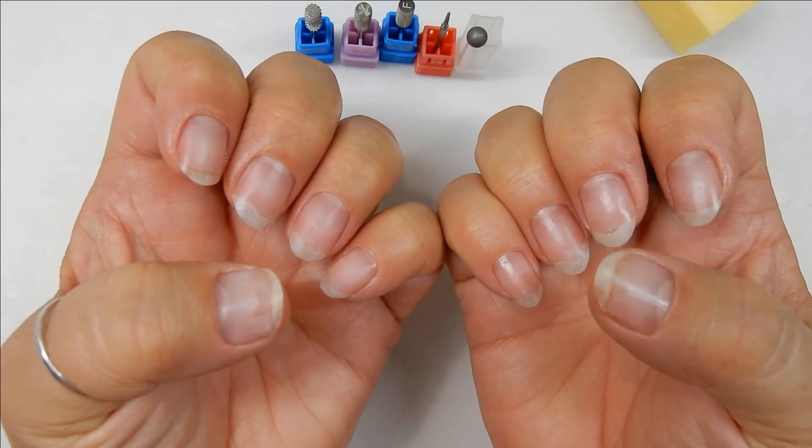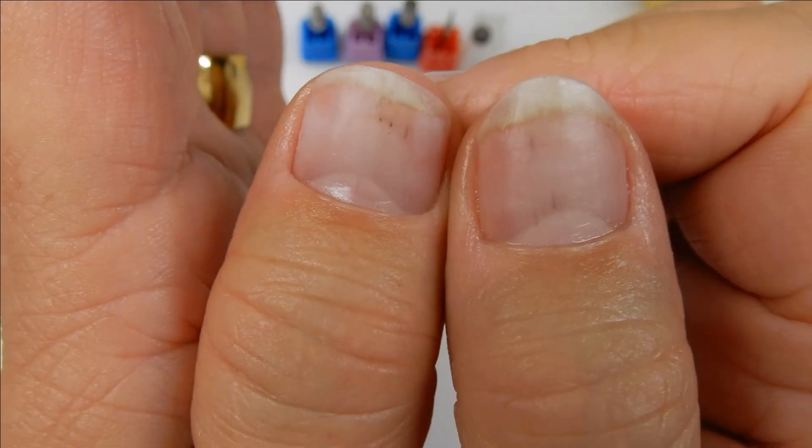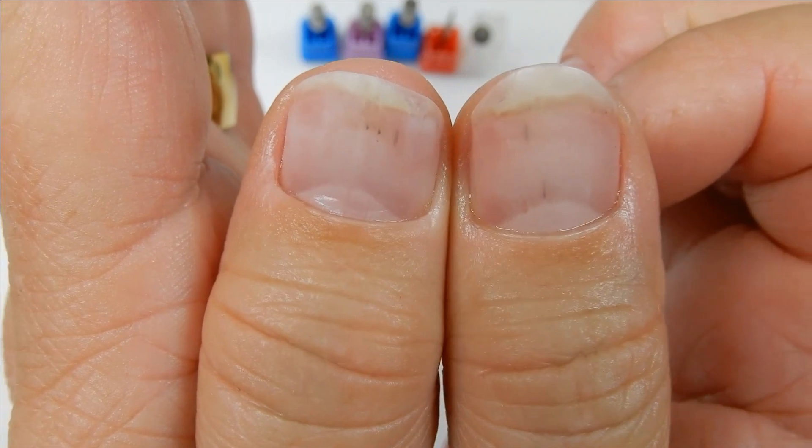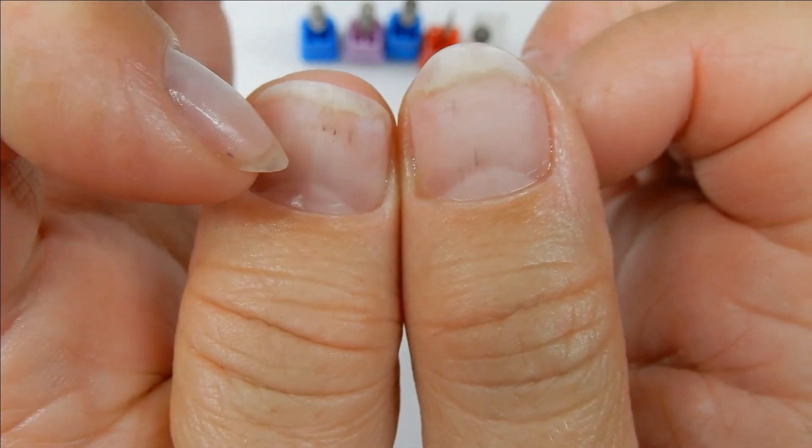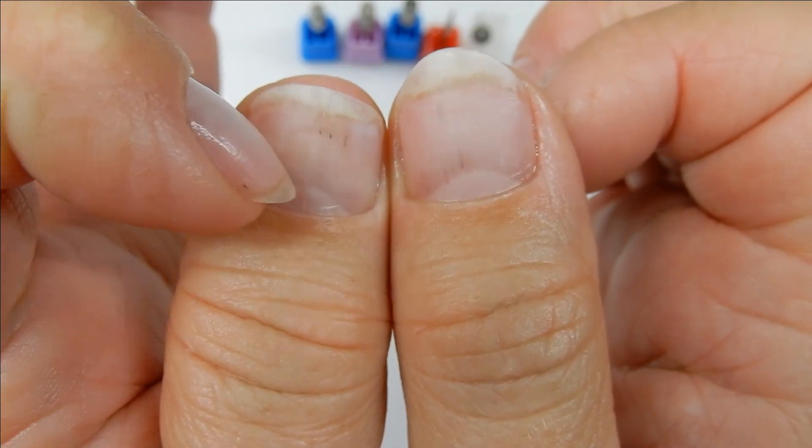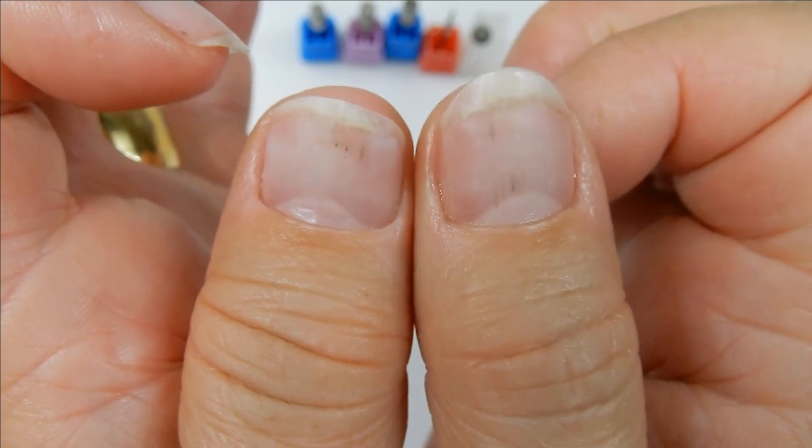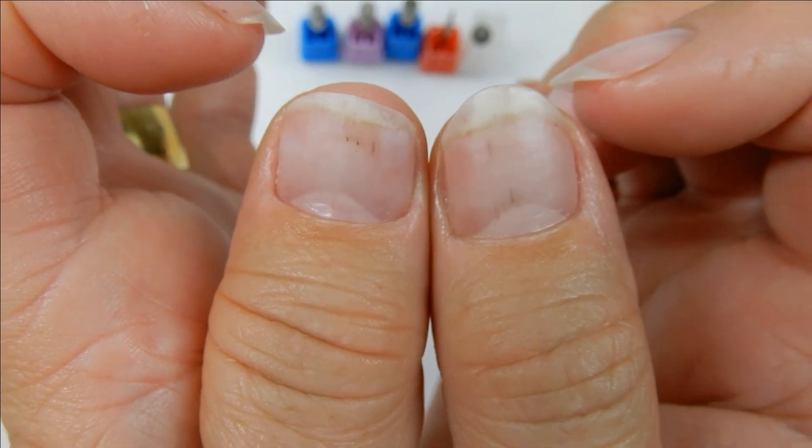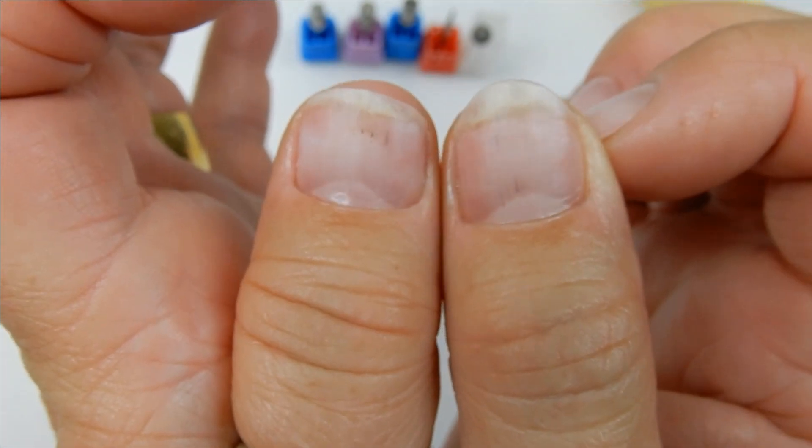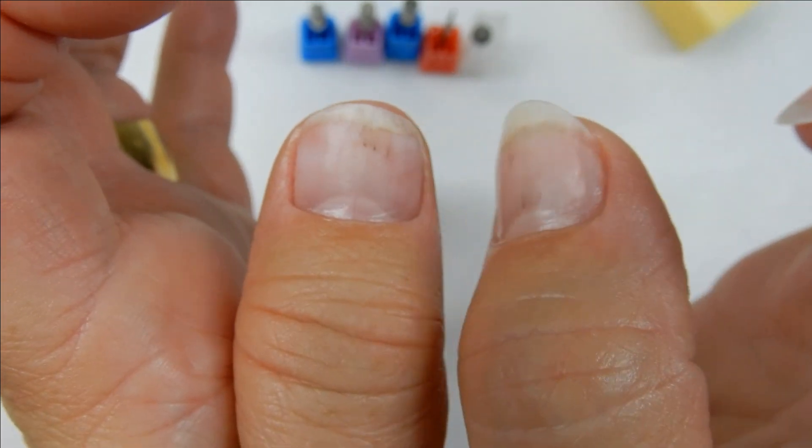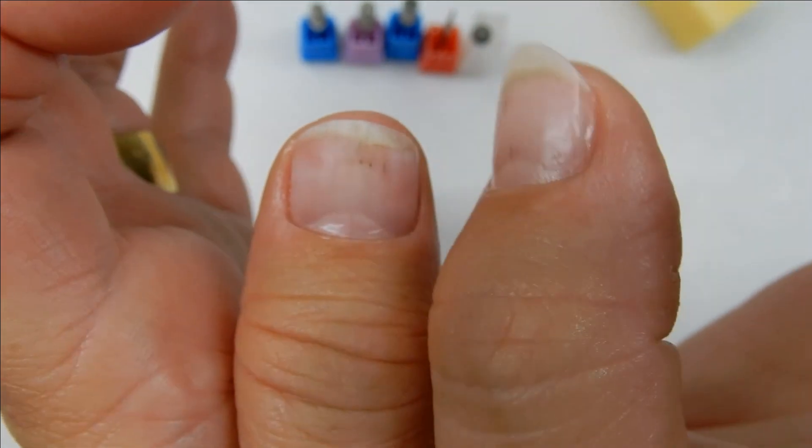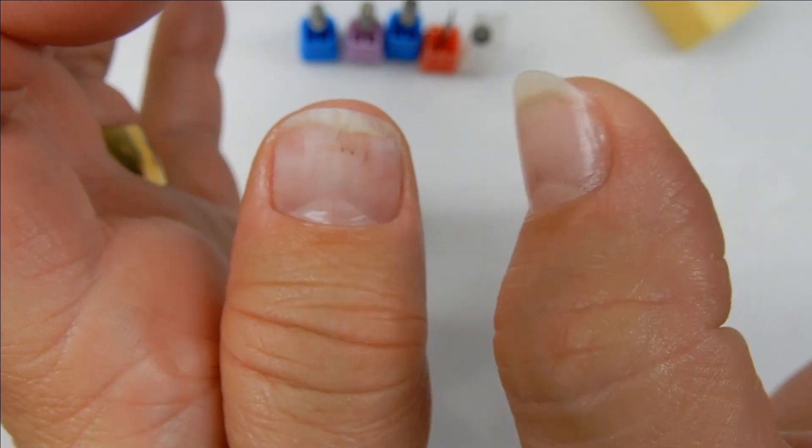But yeah, those do grow out, and that's what a splinter hemorrhage looks like up close. This one was actually way down here and it's growing out. And then there's another one, and again, caused by the kitchen cupboards.